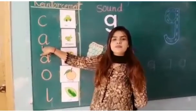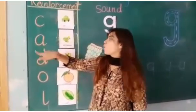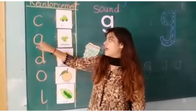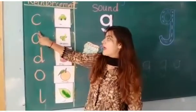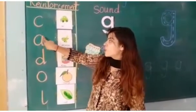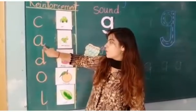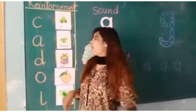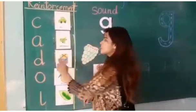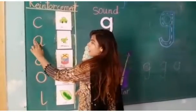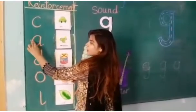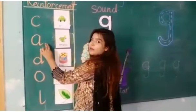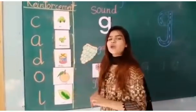Eh. Which sound is this? Eh. Eh is making a kh. Go up, come down and make a tick. Well done.